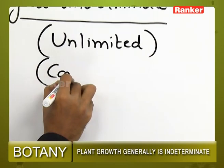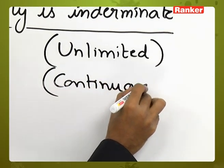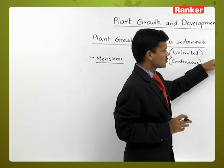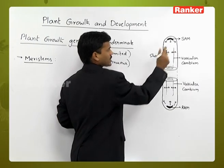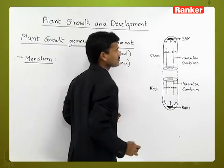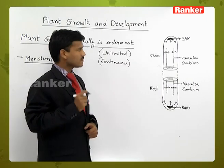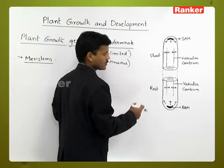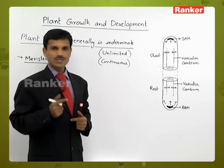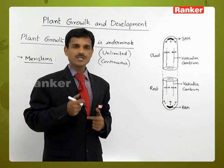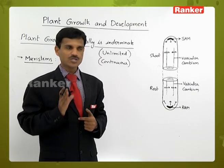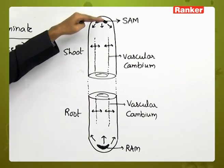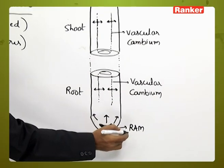In the plant body, there is a shoot system and a root system. In the shoot, the shoot apical meristem is present at the apex of the shoot. A root apical meristem is present at the root apex. Different types of meristems are present in the plant body. Based on location, the meristem at the shoot apex is the shoot apical meristem, and the one at the root apex is the root apical meristem.